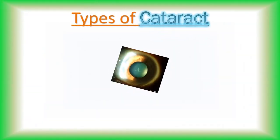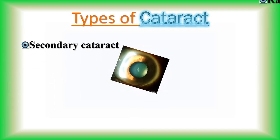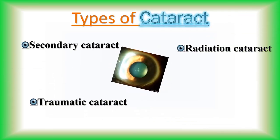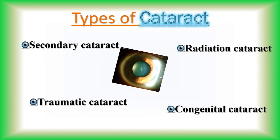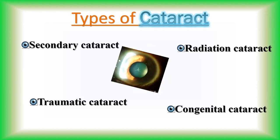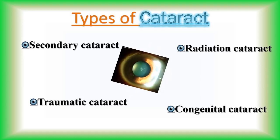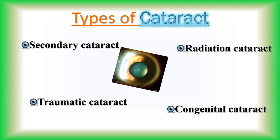While most cataracts are related to age, there are also other types of cataract. In the case of secondary cataract, cataract is a result from another health issue such as surgery or diabetes. Cataracts can also develop from exposure to radiation, or after an eye injury, sometimes years later. In some cases a person is born with cataract or develops it in childhood, often in both eyes.